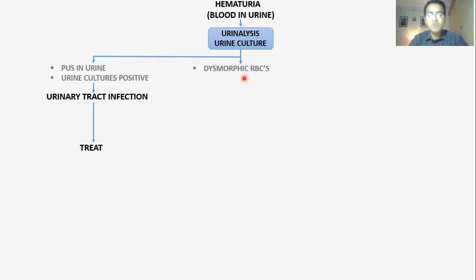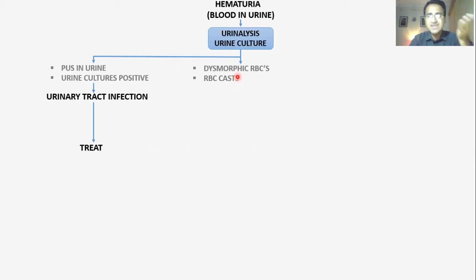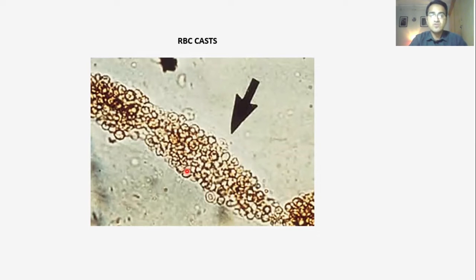Another finding you may see on urinalysis is dysmorphic RBCs. Dysmorphic RBCs are red blood cells that have lost their normal shape. This happens when RBCs pass through damaged tubules within the kidneys and lose their normal shape. You will also see RBC casts, which are aggregates of dysmorphic RBCs that accumulate as they pass through tubules and are found in urine.